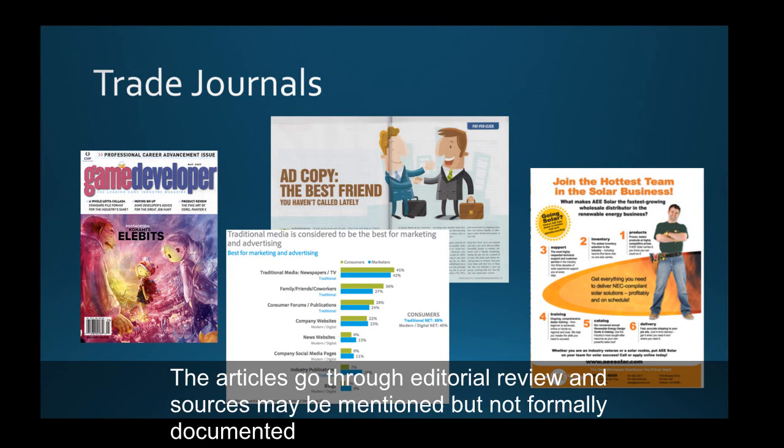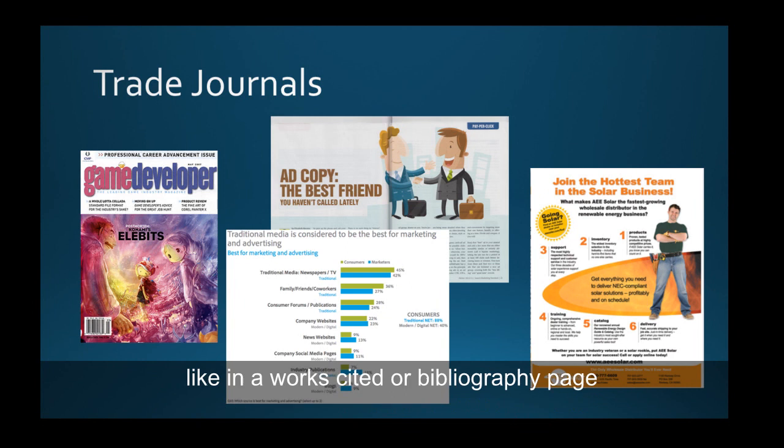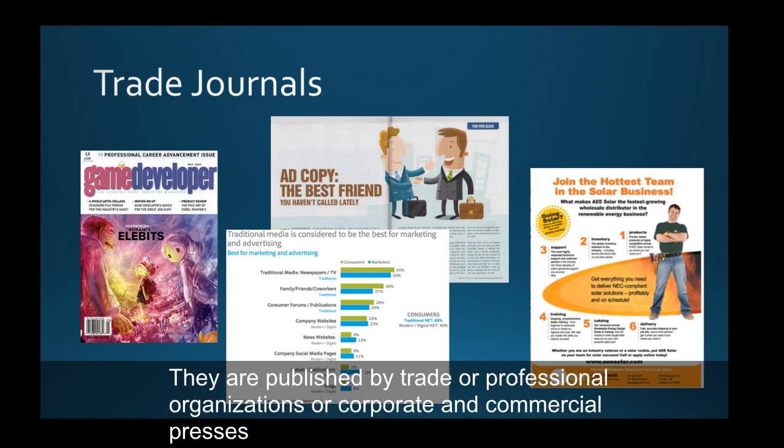Trade journals can contain a moderate amount of ads directed to the trade or industry. The articles go through editorial review, and sources may be mentioned but not formally documented like in a works cited or bibliography page. They're published by trade or professional organizations, or corporate and commercial presses.